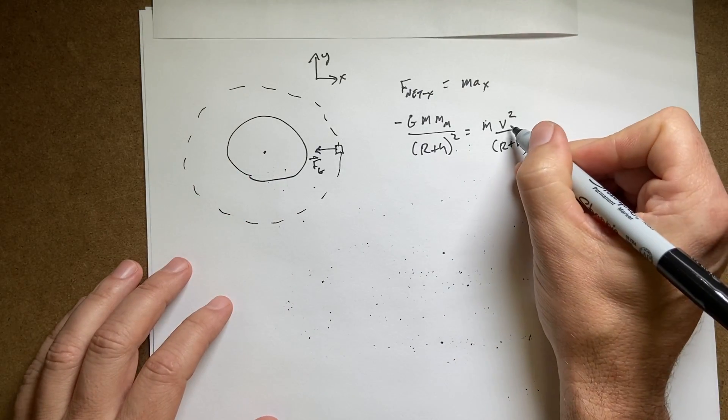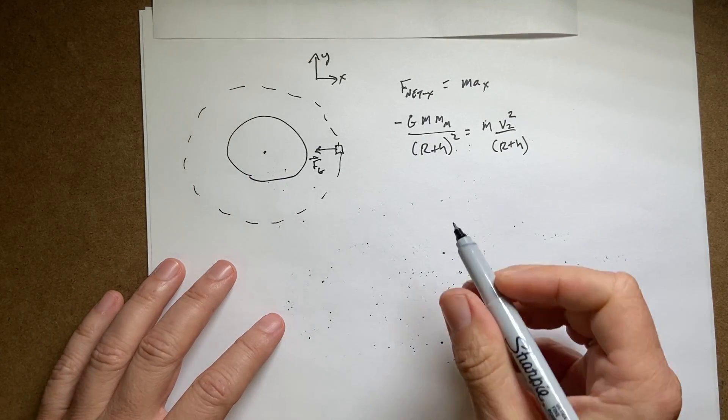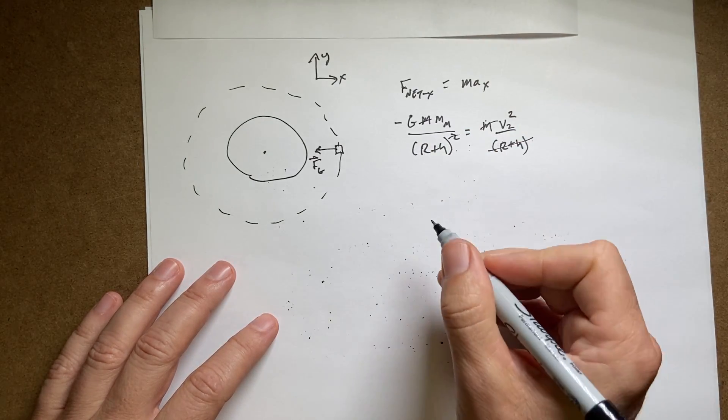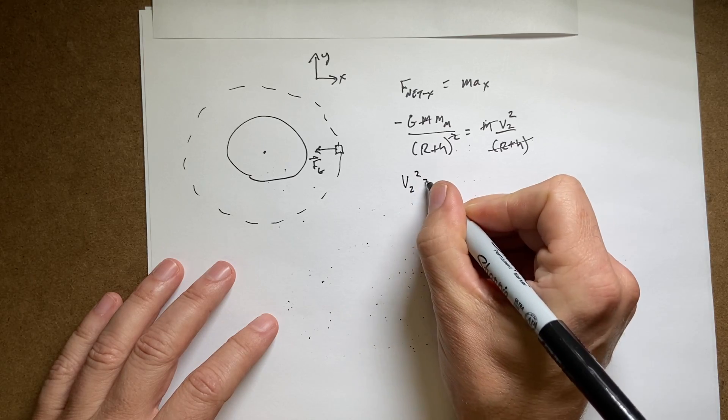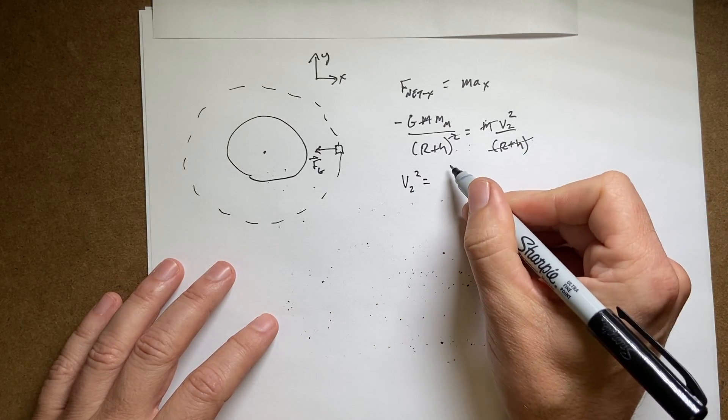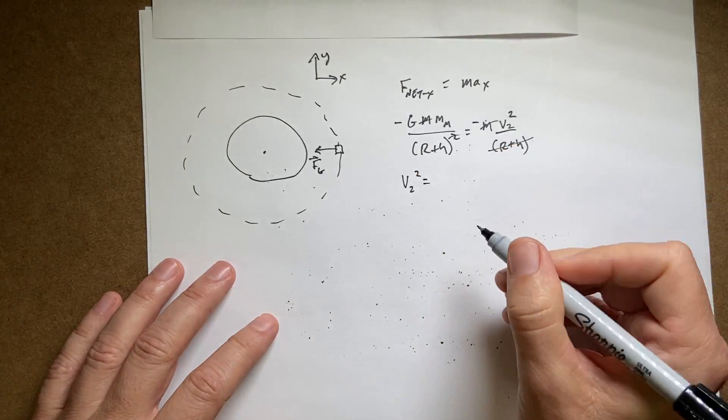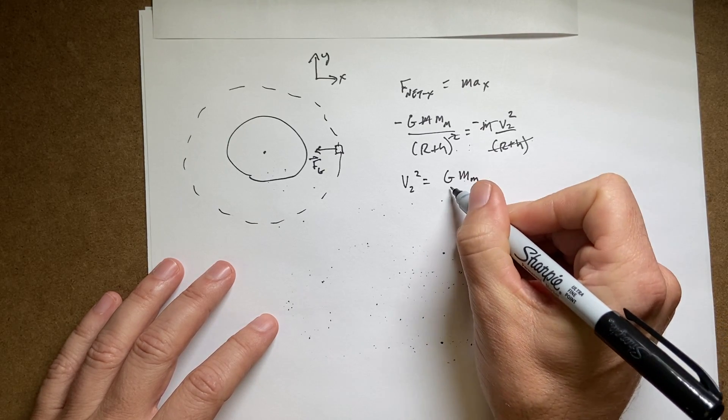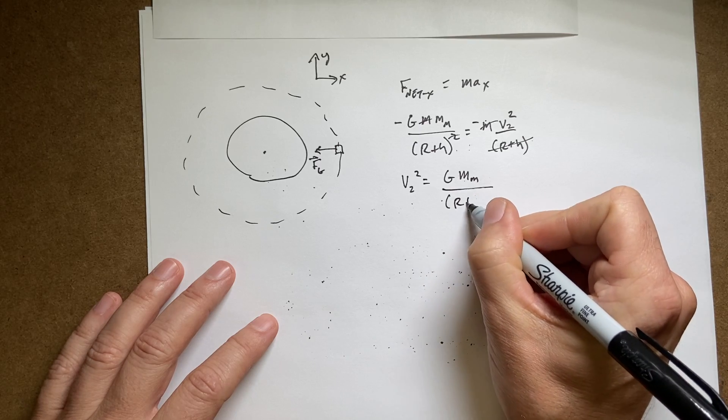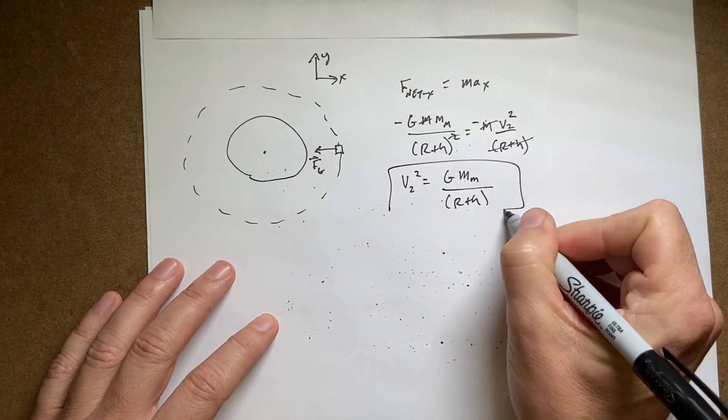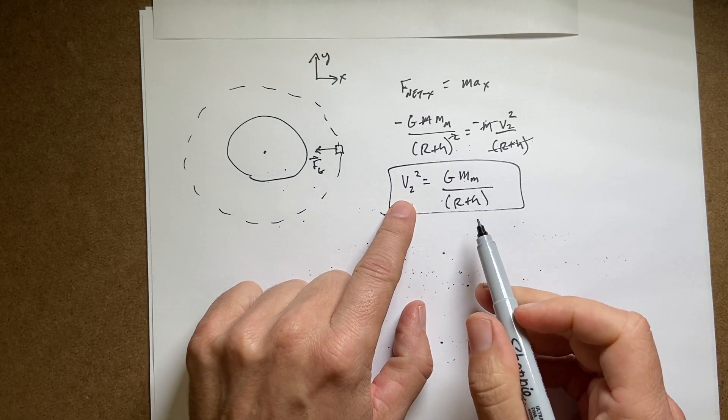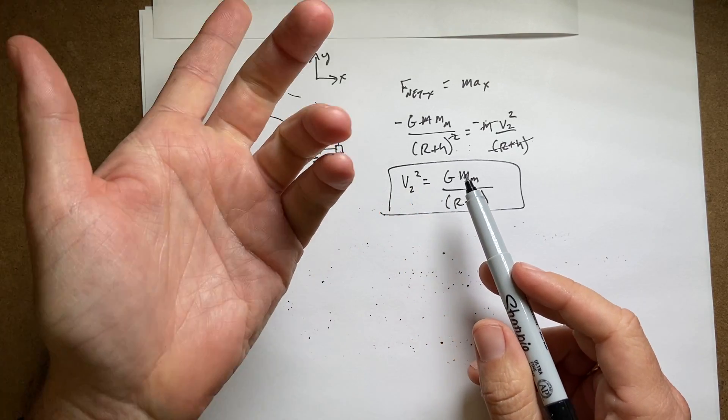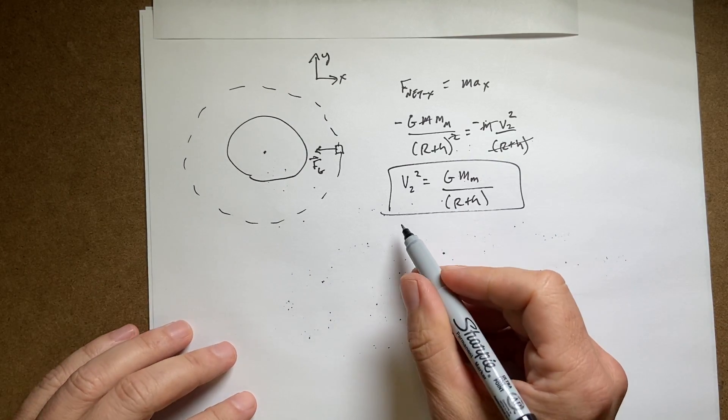Now, that's actually v2. I can solve for v2. So this is going to cancel with that. This is going to cancel with that. I get v2 squared equals g mass of the moon over r plus h. Now, I could go ahead and get a value for this, but I'm not going to. And I'm not even going to take the square root because actually I need v squared.